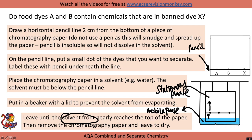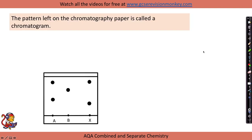Depending on their solubility, compounds will stop at different distances up the paper. The solvent front is where the solvent finishes as it goes up the paper — where it reaches near the top is called the solvent front, and at that point we remove the paper and leave it to dry. The pattern left on the chromatography paper is called a chromatogram.